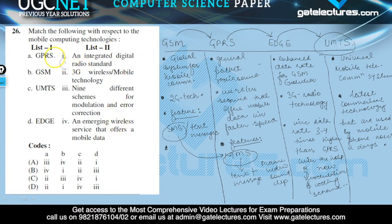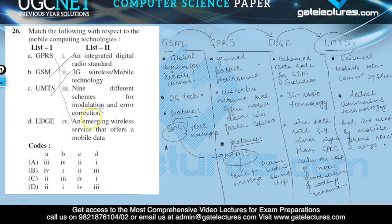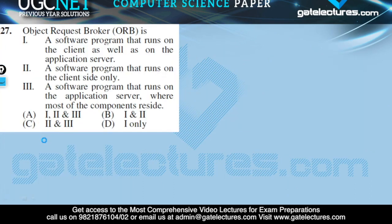GPRS is an emerging wireless service that offers mobile data at a very fast speed compared to GSM, so we match GPRS with that. GSM is just an integrated digital radio standard using 2G technology. UMTS is a 3G wireless mobile telecom technology. EDGE increases the data rate of GPRS using different modulations, coding schemes, and error corrections. So the correct answer of this question is option B.